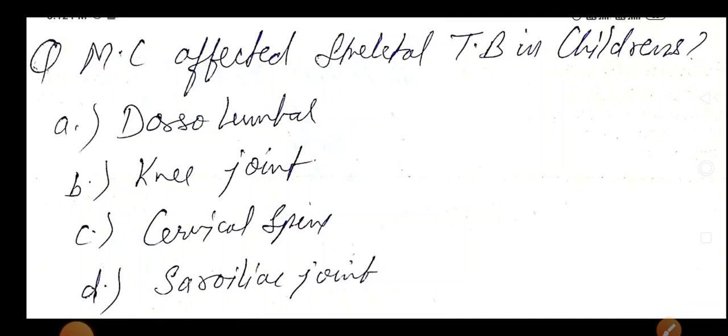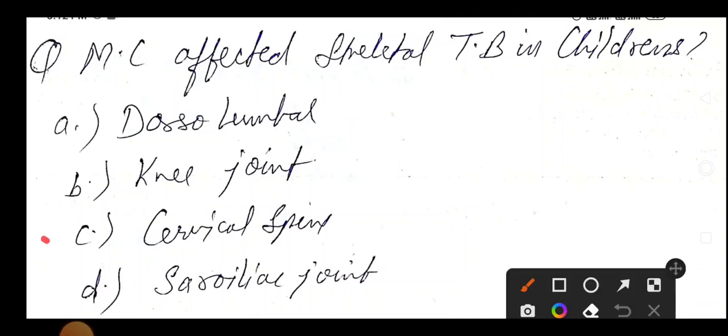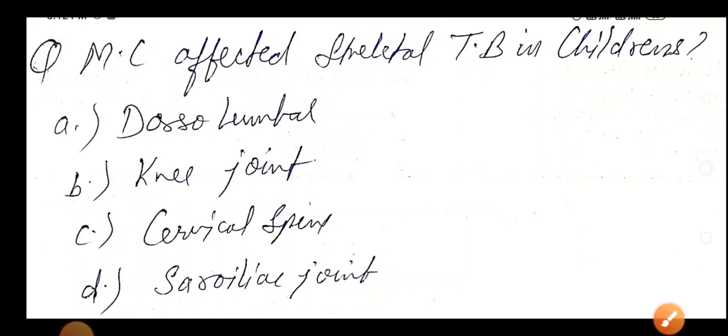Most affected skeletal TB in children, C for children, C for cervical spine. If they ask in adults, then go for dorsal lumbar. If dorsal, if thoracic, lumbar, both are in option, choose thoracic, means dorso. Okay, hope it's clear.